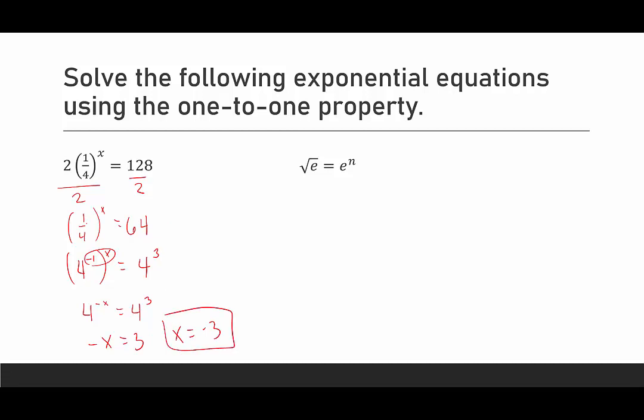If you chose two, that's fine. One-fourth would be two to the negative two, and then 64 is two to the sixth. So then you would end up with negative two x equals six, which would still give you x equals negative three. And of course, if you chose a half or a fourth, you would also end up with x equals negative three in the end.